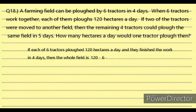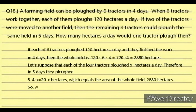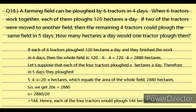Solution: The whole field is 120 times 6 times 4 equals 2,880 hectares. Let each of the 4 remaining tractors plow X hectares a day. In 5 days they plow 5 times 4 times X equals 20X hectares, which equals 2,880. So 20X equals 2,880, giving X equals 2,880 divided by 20 equals 144. Each of the 4 tractors would plow 144 hectares a day. The answer is letter C.